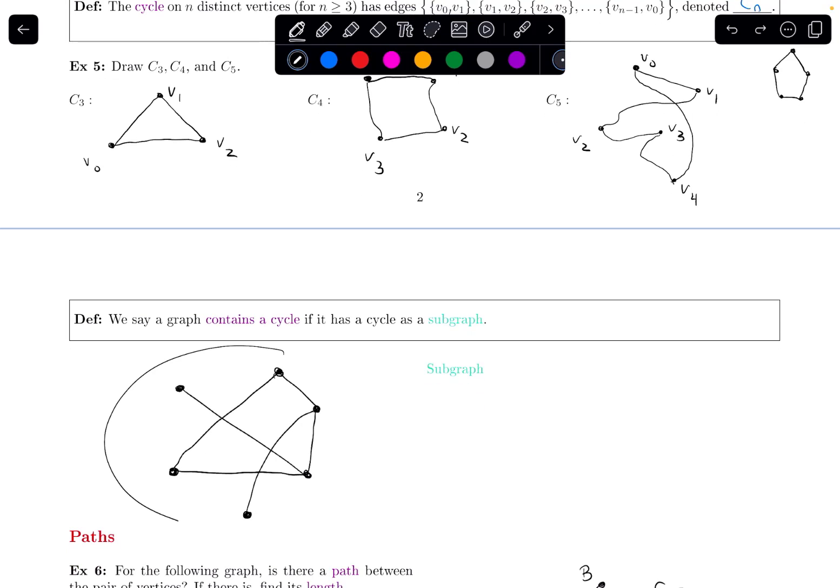So what do we mean by that? Here is a graph right here. A subgraph is a subset of this graph. I'm going to take a subset of some of these vertices, and a subset of some of the edges that are connected between those vertices.